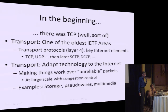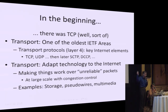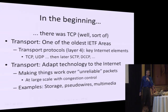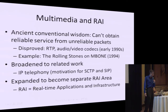The transport area has grown out of this. Our job is fundamentally to adapt technology to the Internet — make things work over fundamentally unreliable packets, at large scale and with congestion control. Three examples where we've done this are storage, pseudowires, and multimedia. Let's talk about multimedia and the RIE area for a bit.